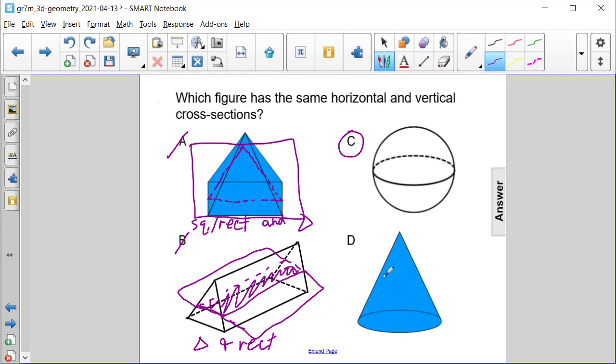And in an earlier example, we saw that a horizontal cross section of a cone would give us a circle, and the vertical cross section of a cone gives us a triangle.